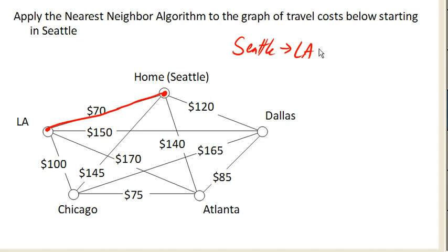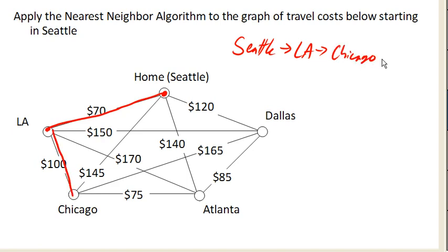And then from LA we've got — looks like the cheapest option is 100, 170, 150 — 100 is cheapest. So to Chicago. Got some good travel deals here.